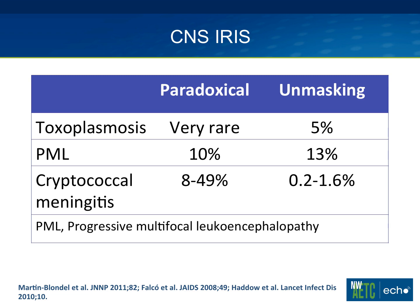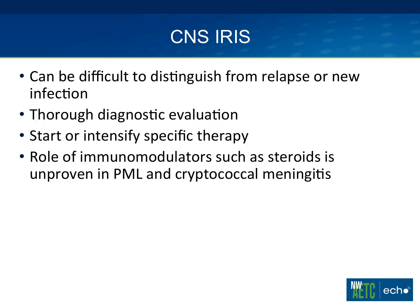For progressive multifocal leukoencephalopathy, IRIS is a big deal — about a quarter of patients develop it in either the paradoxical or unmasking setting. Because antiretrovirals are the only effective treatment for PML, this presents a serious problem. For cryptococcal meningitis, paradoxical IRIS can occur up to half the time. A major question when treating cryptococcal meningitis is when to start antiretrovirals. CNS-IRIS is difficult to distinguish from relapse, requires thorough diagnostic evaluation, and the role of immunomodulators such as steroids is unknown in both PML and cryptococcal meningitis.